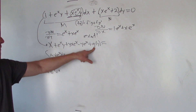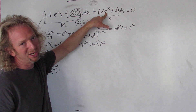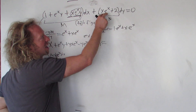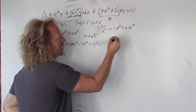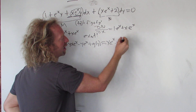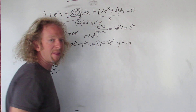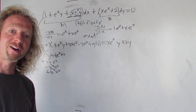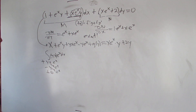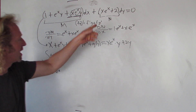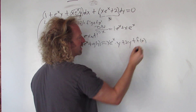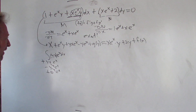When integrating with respect to x, we add an unknown function of the other variable, g(y). Now integrating N with respect to y: x·eˣ is a constant, so the integral is x·eˣ·y. The integral of 2 is just 2y. Then we add an unknown function of the other variable, which here is x, so plus f(x).